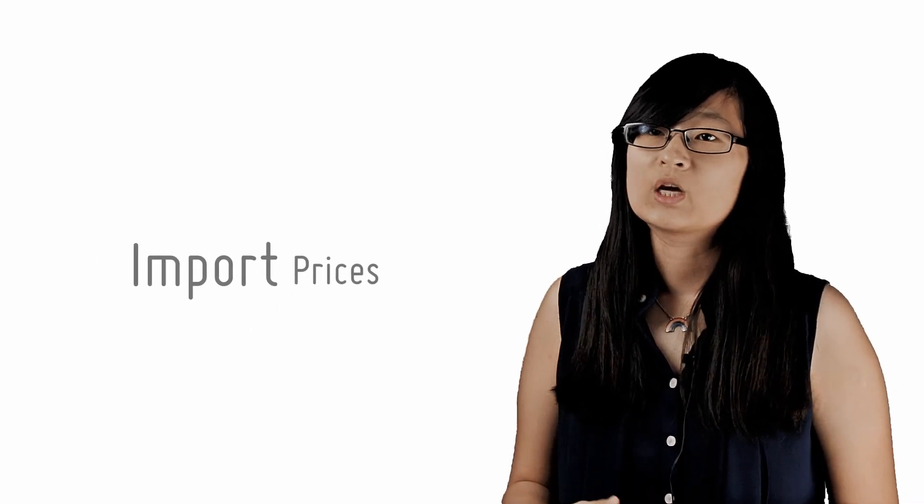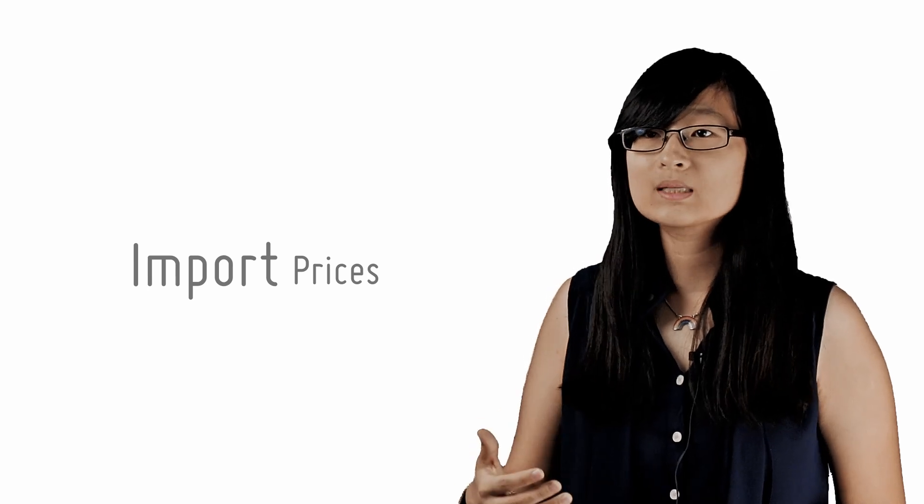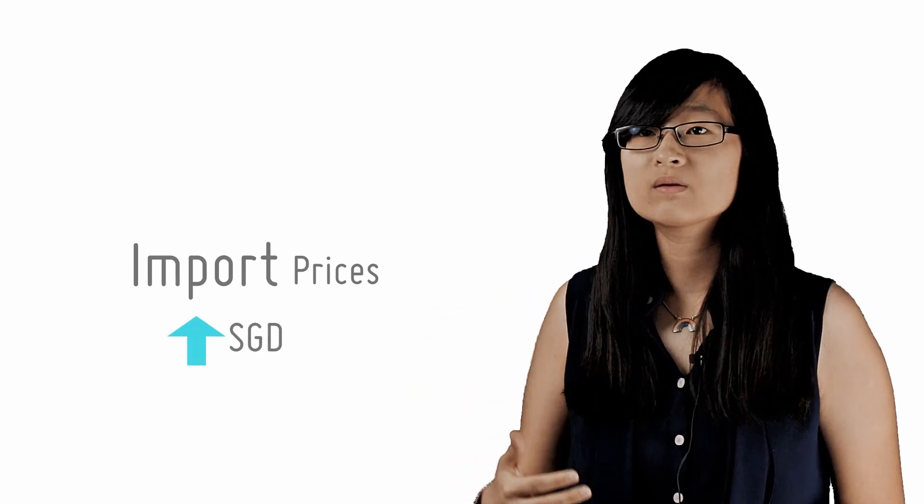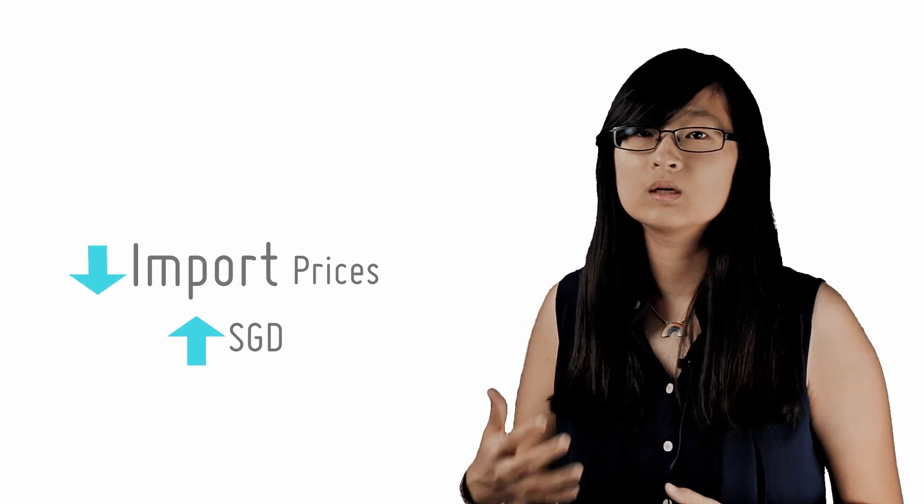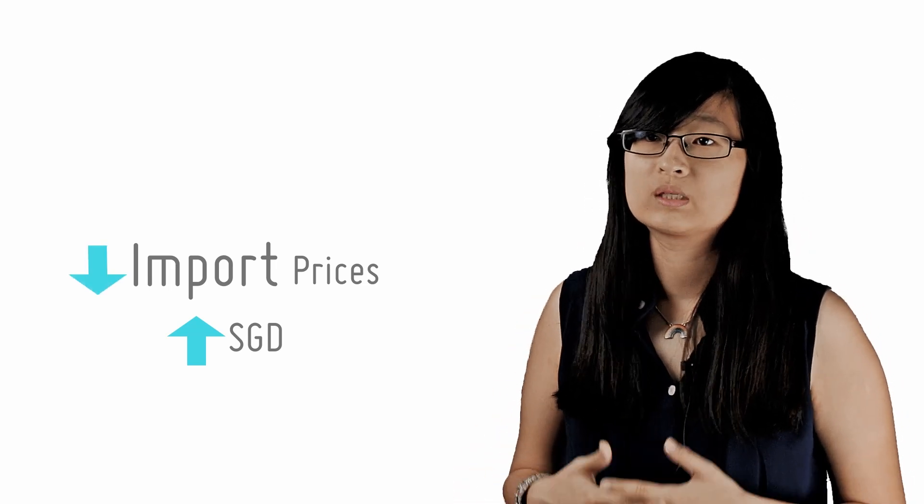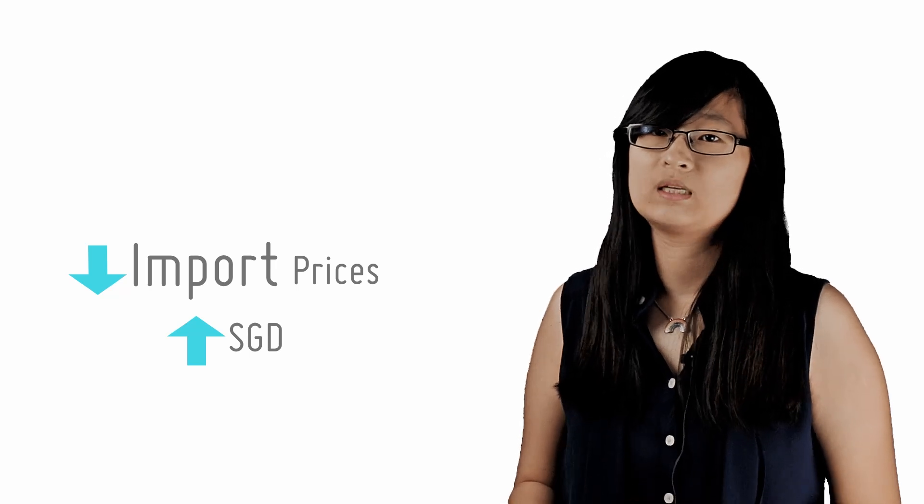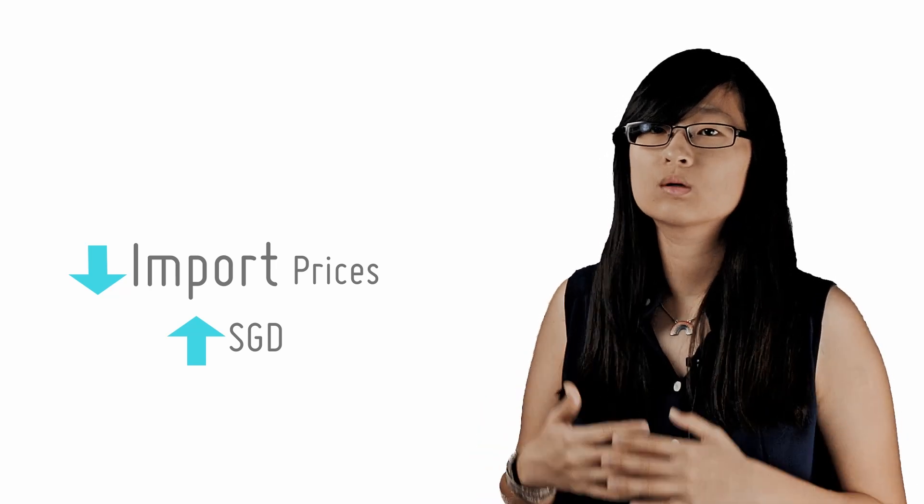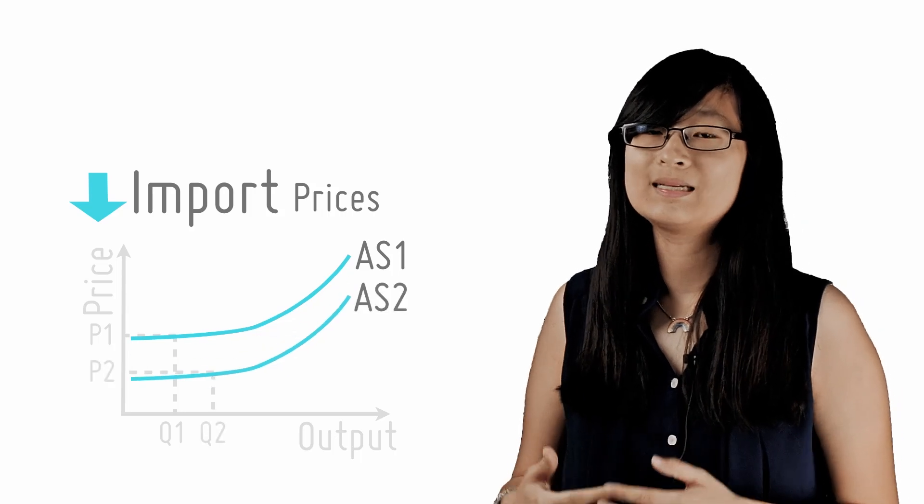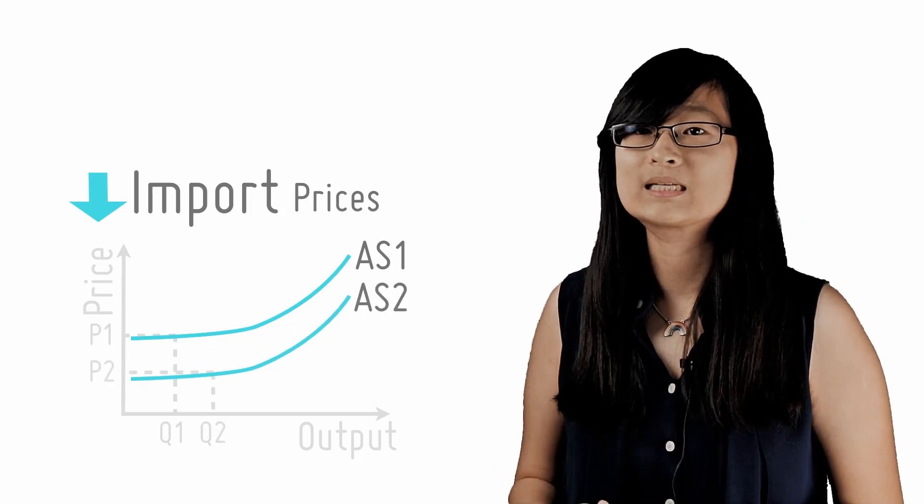We already mentioned this briefly in Checkpoint 4.2. When the MAS allows the Singapore dollar to appreciate against foreign currencies, the prices of imported raw materials and intermediate goods in terms of Singapore dollars will fall. Given our lack of natural resources and raw materials, this effect is quite significant and it helps to reduce cost-push inflation by shifting the AS curve downwards, thus insulating the domestic economy from price hikes overseas.